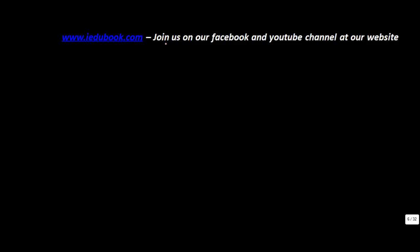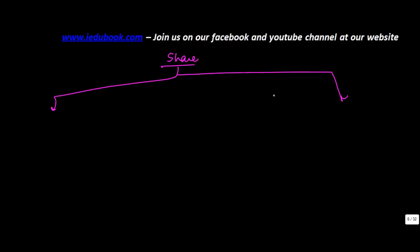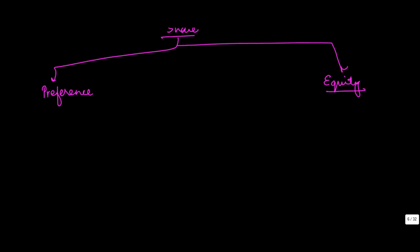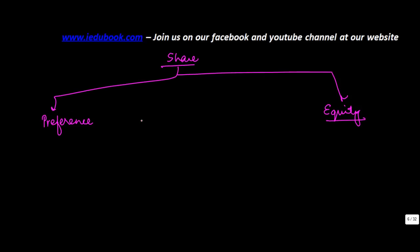Let's understand what we mean by preference shares. Share capital, as mentioned in earlier videos, is classified into two categories: preference shares and equity shares. As the name itself suggests, preference shares have certain preferences. You must be wondering what preferences are available to preference shareholders.